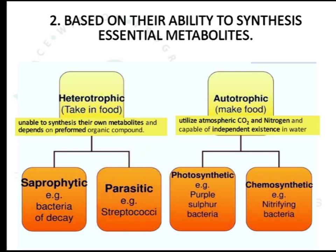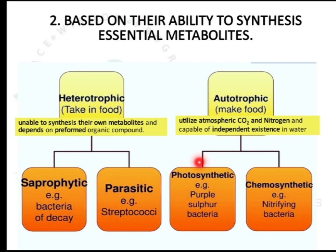Autotrophs are classified into photosynthetic and chemosynthetic. Photosynthetic autotrophs use a light source for production using carbon dioxide and nitrogen — examples are purple sulfur bacteria. Chemosynthetic bacteria use chemicals for their production — an example is nitrifying bacteria.